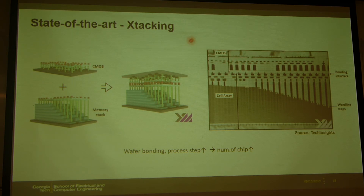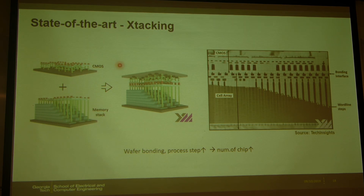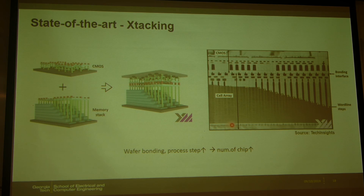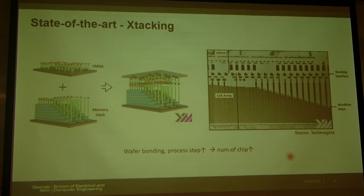The final one is called X-Stacking, proposed by YMTC, a Chinese company. It is simply wafer bonding. In one wafer, the CMOS circuit is fabricated, and in the other wafer, memory cells are stacked. Then the two are bonded together. Ideally it is a very good way because it can decrease the chip size. But this bonding is very hard to do, and achieving good yield will be very difficult and will take a very long time.